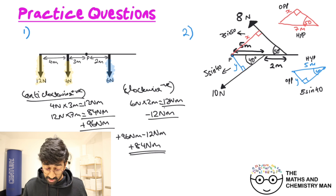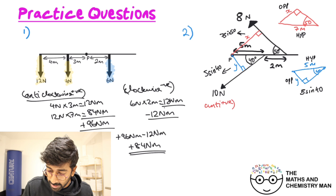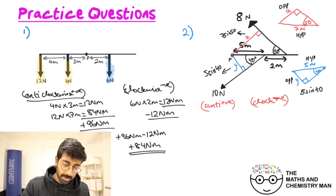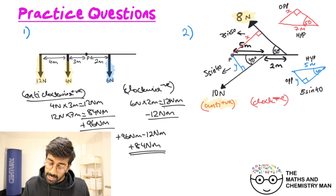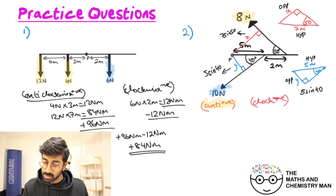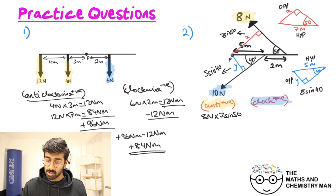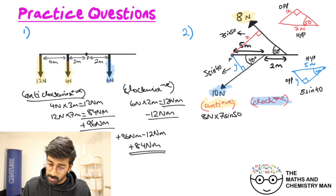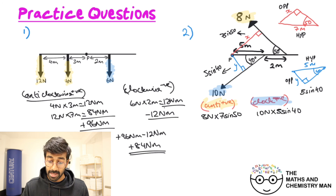Setting up anti-clockwise as positive and clockwise as negative. The eight Newton force is going anti-clockwise, the ten Newton force is going clockwise. For the anti-clockwise moment: eight Newtons multiplied by 7 sine 50 — positive. For the clockwise: ten Newtons multiplied by 5 sine 40 — negative.